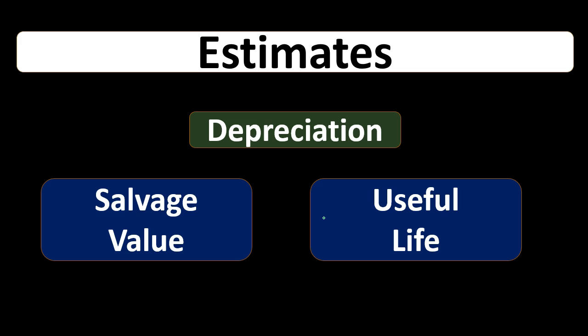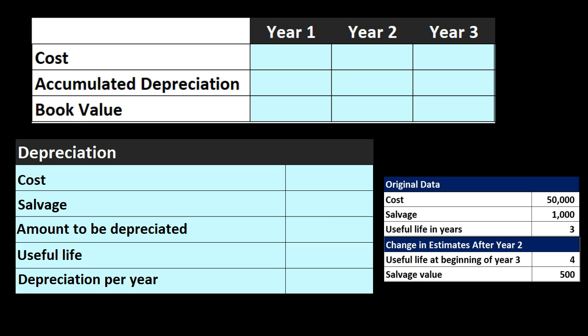If there's a significant change in these factors, we go back and ask how we're going to deal with the new information that makes one or both of these factors change. When recording a change in estimate, we typically do it at the point in time that the change has taken place, going forward. We typically won't go back and change the estimate for prior periods that have already passed, because it would require reopening closed books, changing the income statement, and adjusting retained earnings. So we draw a line and make the calculation going forward from that point in time.